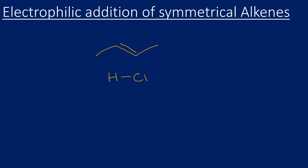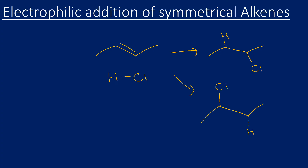Using but-2-ene as an example with HCl — I won't do the full mechanism here, I'll leave that for the next video — there are two possible products: the chlorine here with the hydrogen on the left, or the chlorine on the other carbon with the hydrogen on the right. If you name both molecules, they have the exact same name: 2-chlorobutane. So a symmetrical alkene always gives rise to one product — there's no such thing as a major and a minor product.